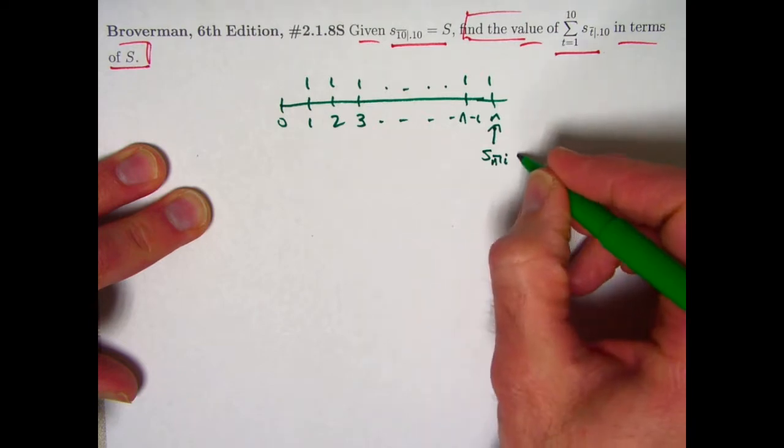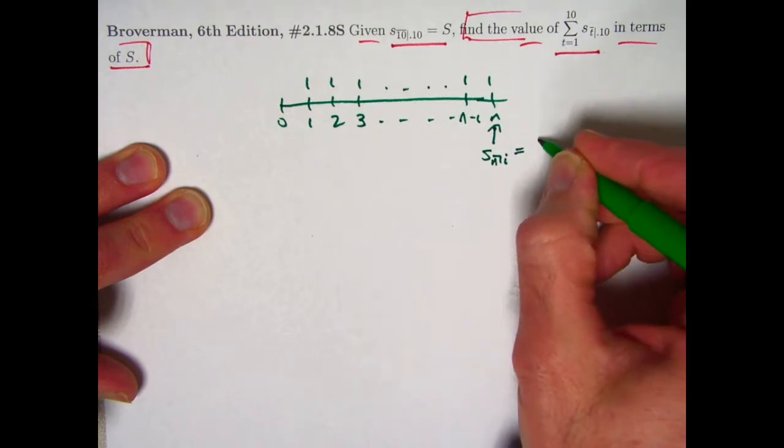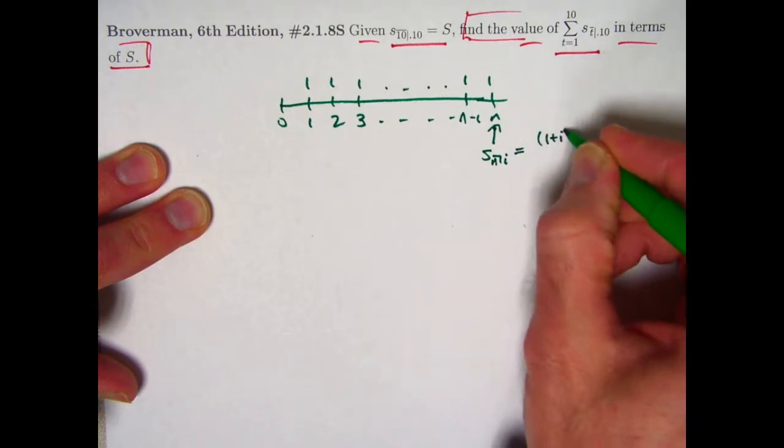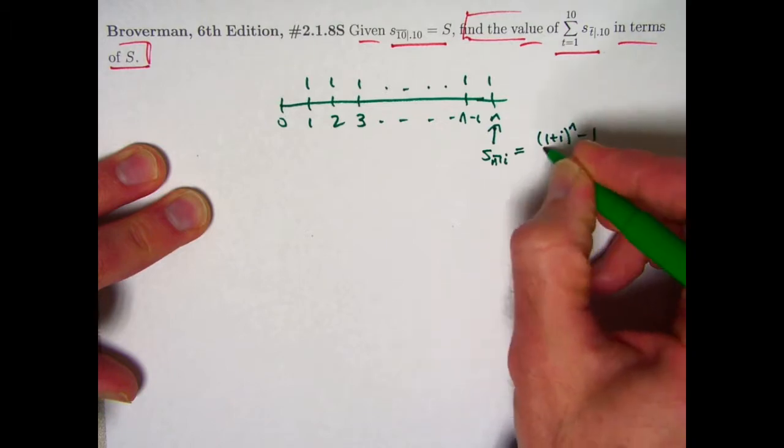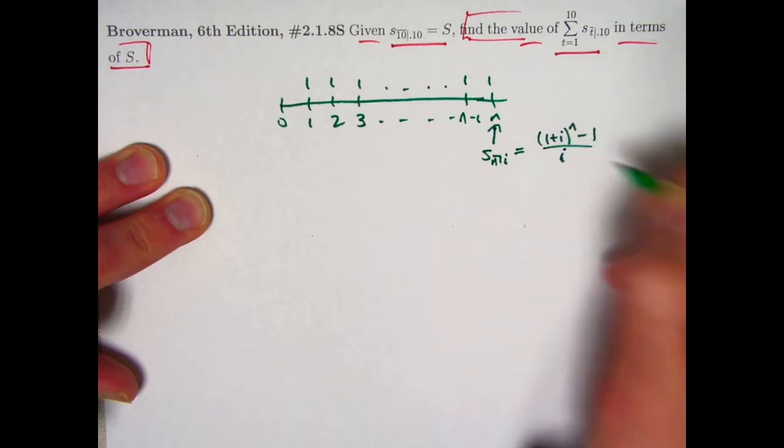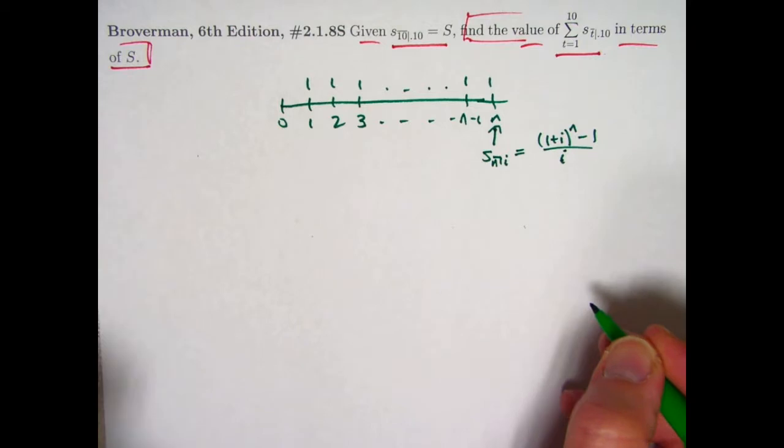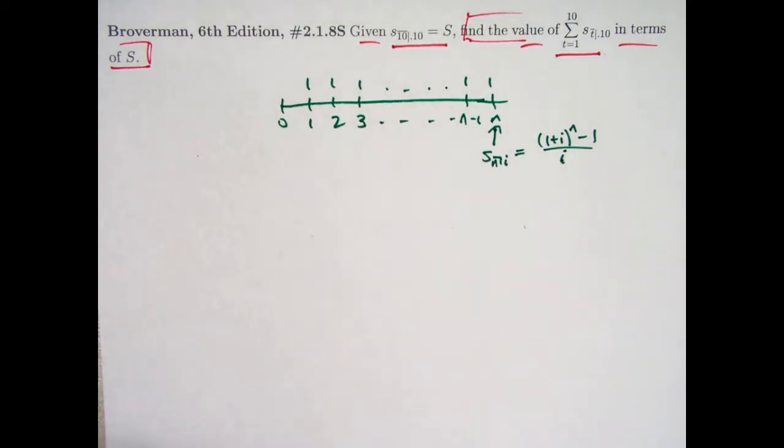And we saw in the last video that the formula for this is (1 + i)^n - 1 divided by i. And this is definitely a formula you want to have memorized and you will have memorized if you're studying for actuarial exam 2. That's what the symbol means.